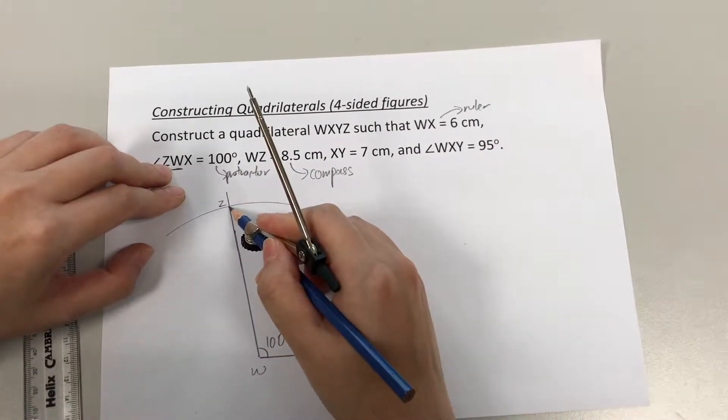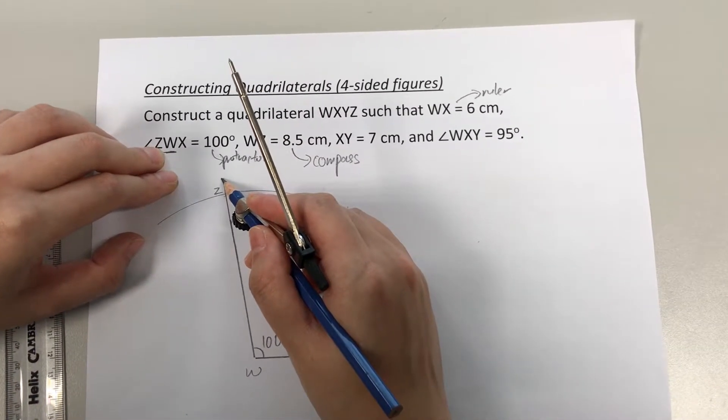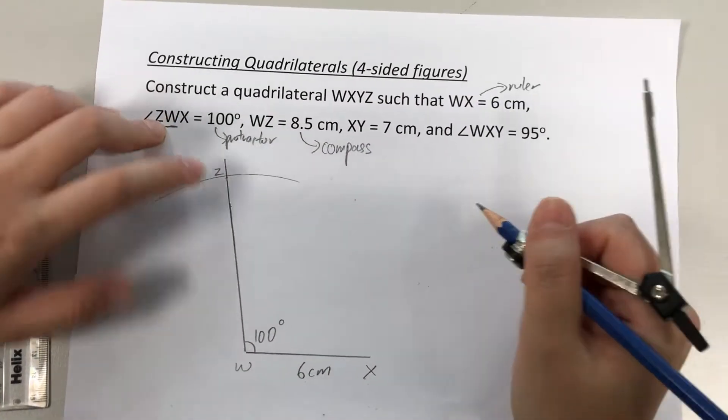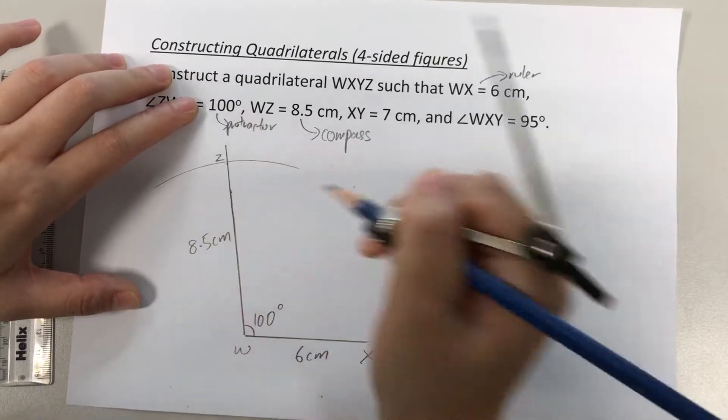So this meeting point between the curve and the line is where point Z is. Okay, it's important to note point Z is over here. Point Z is not where your line ends. It is where the curve and the line meets. So this is where point Z is. Alright, and WZ, as we have drawn using our compass just now, is 8.5 cm.